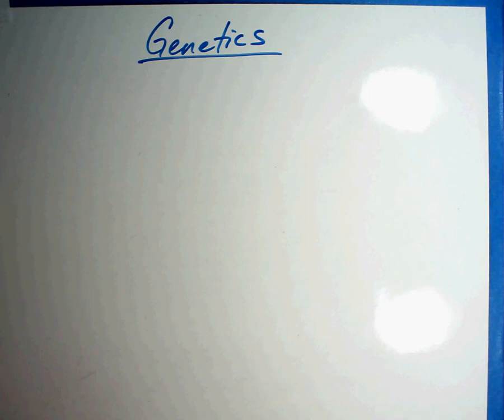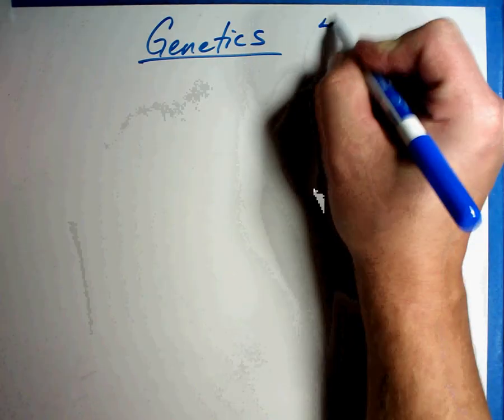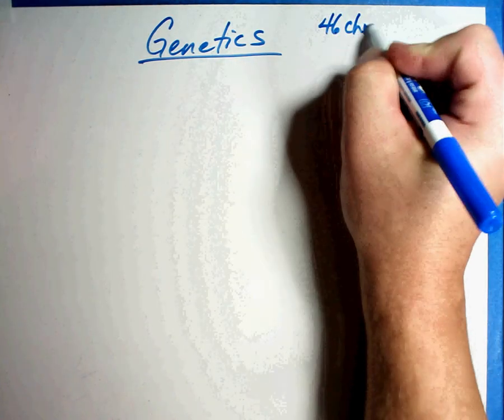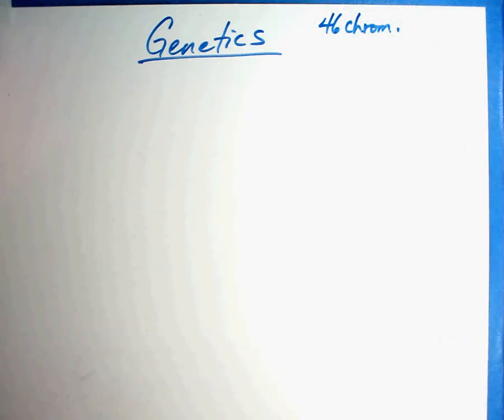There's going to be a couple of lessons we're going to talk about with genetics. The first one we're going to talk about is how do we make the cells that pass on our genes? Well, quick reminder, as humans we have 46 chromosomes.